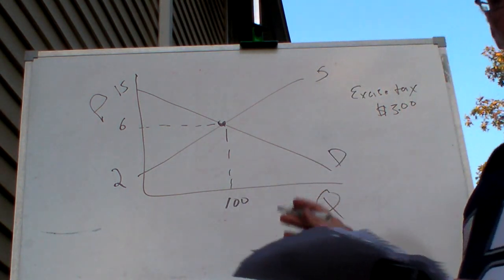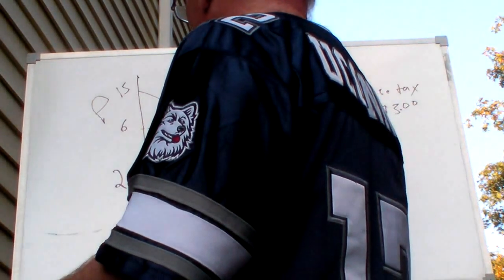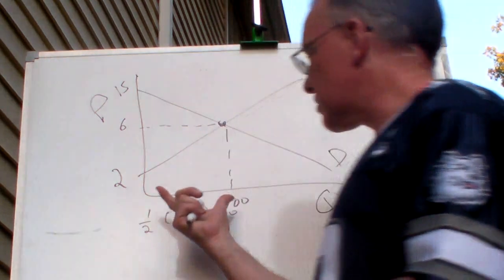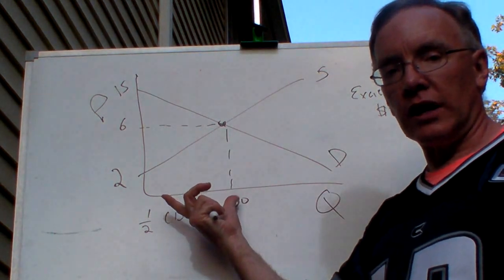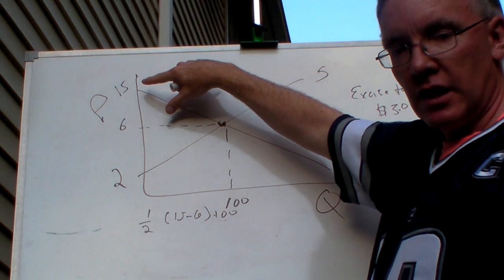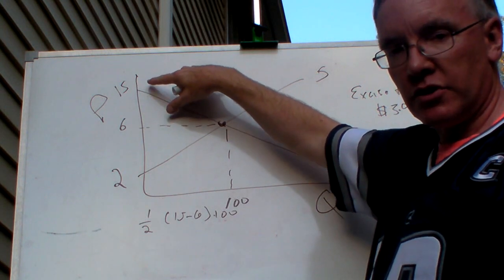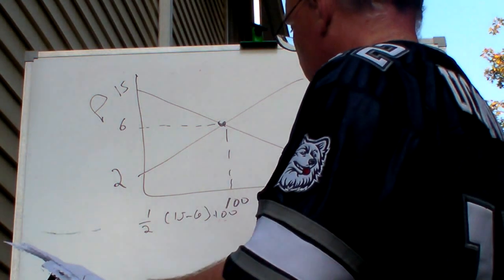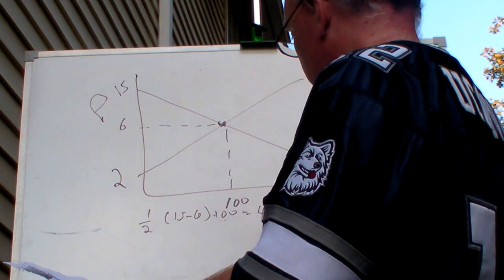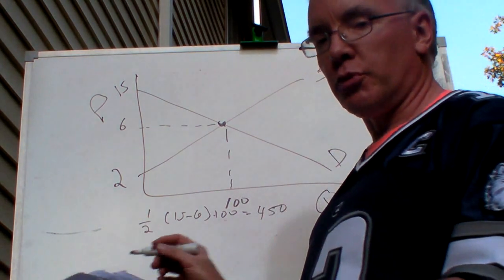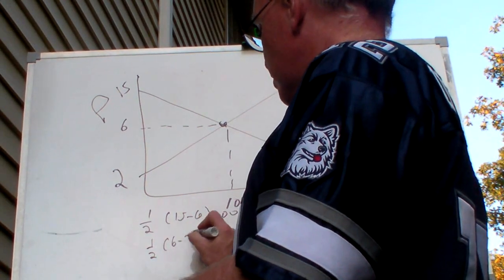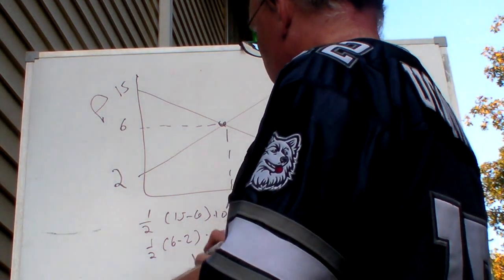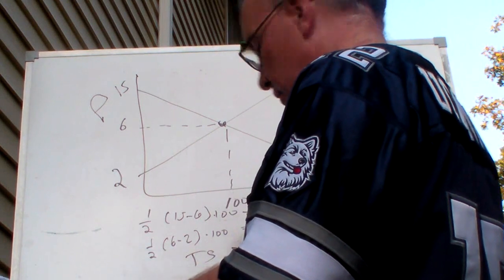We're going to have a consumer surplus equal to one-half of (15 minus 6) times 100 — the base of our triangle is always the quantity, and the height is the difference between the equilibrium price and the price where zero people would want to buy. So consumer surplus equals $450. The producer surplus is one-half of (6 minus 2) times 100, which equals $200. So our total surplus equals $650.